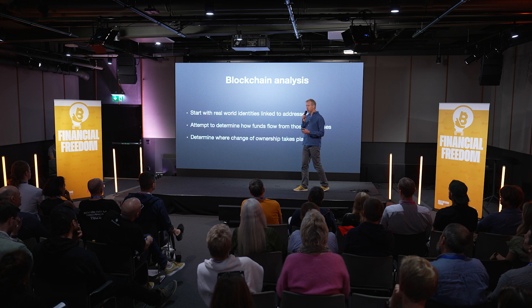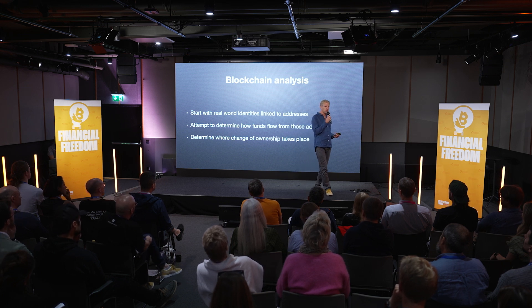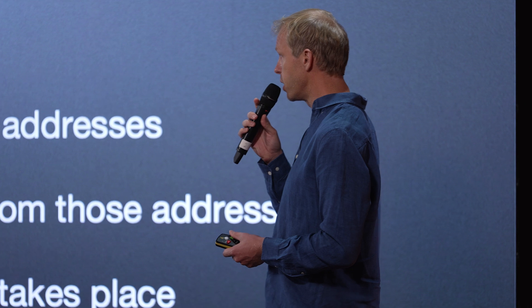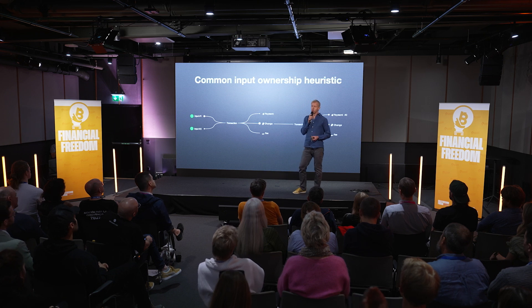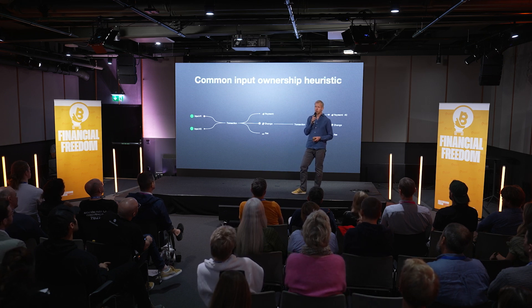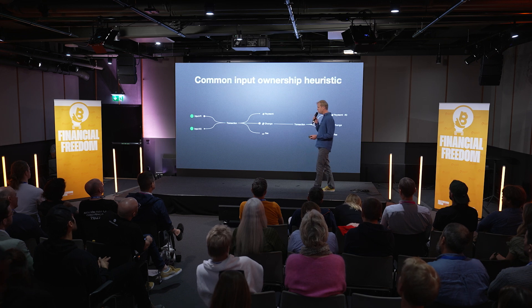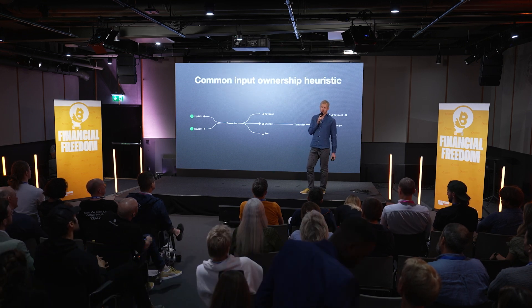If we consider what blockchain analysis is doing — starting with these real-world identities and following the flow of funds through the network — when looked at from another way, it's actually just trying to determine where the change of ownership takes place. To put ourselves in the heads of people trying to do this work, we start with some common assumptions. The most common is known as the common input ownership heuristic: we assume that all of the inputs are owned by the same person or entity.